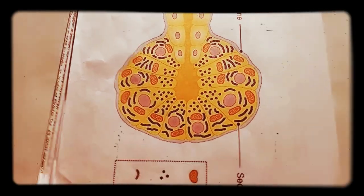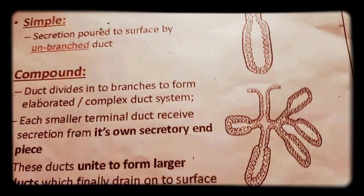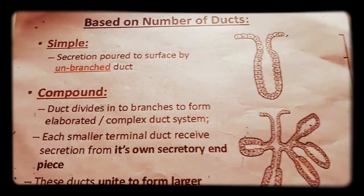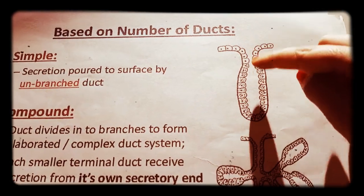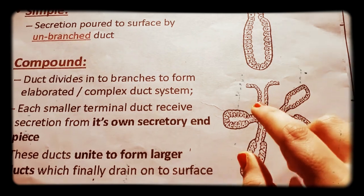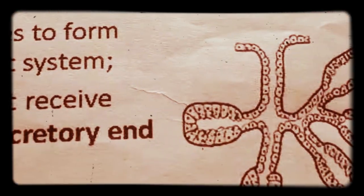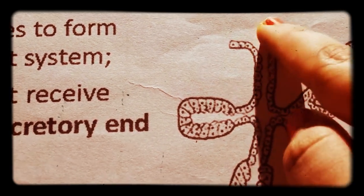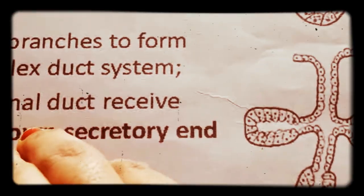We will now discuss classification based on the number of ducts in exocrine glands. 'Simple' means a single duct, and 'compound' means the secretory units connect to terminal ducts which merge into larger ducts — so compound means multiple branching ducts.